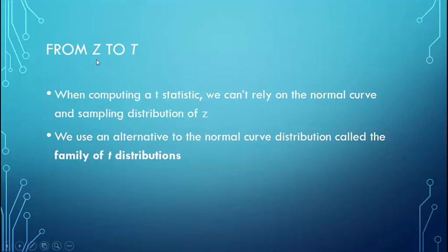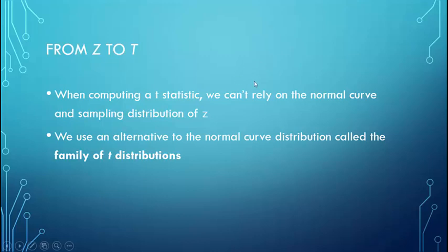Moving from a Z-score to a T-score: a T is an estimated Z because we don't know the population standard deviation sigma. In order to calculate a Z-score, the formula is Z equals the sample mean minus the population mean over the standard error of the mean. We calculated standard error using the population standard deviation sigma. But in this case, we don't have sigma, so we estimate it, and therefore our T is an estimated Z.